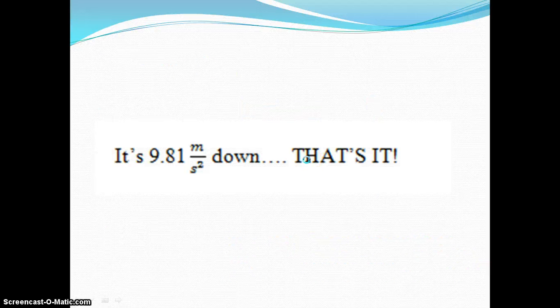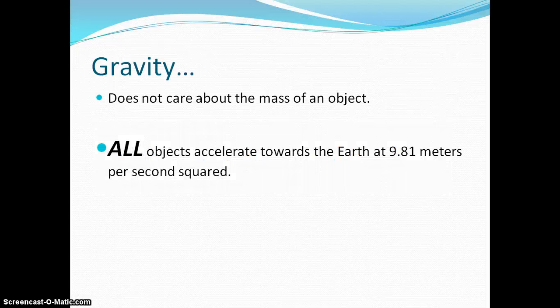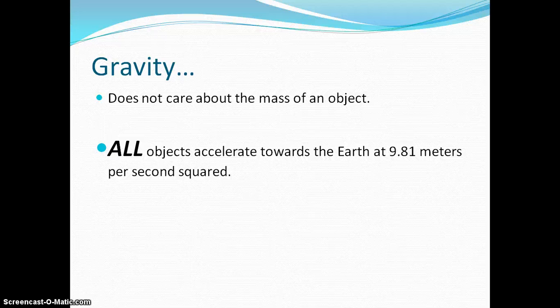That's it. 9.81 meters per second squared down. Gravity does not care about the mass of an object. All objects fall at the same rate in terms of acceleration: 9.81 meters per second squared.